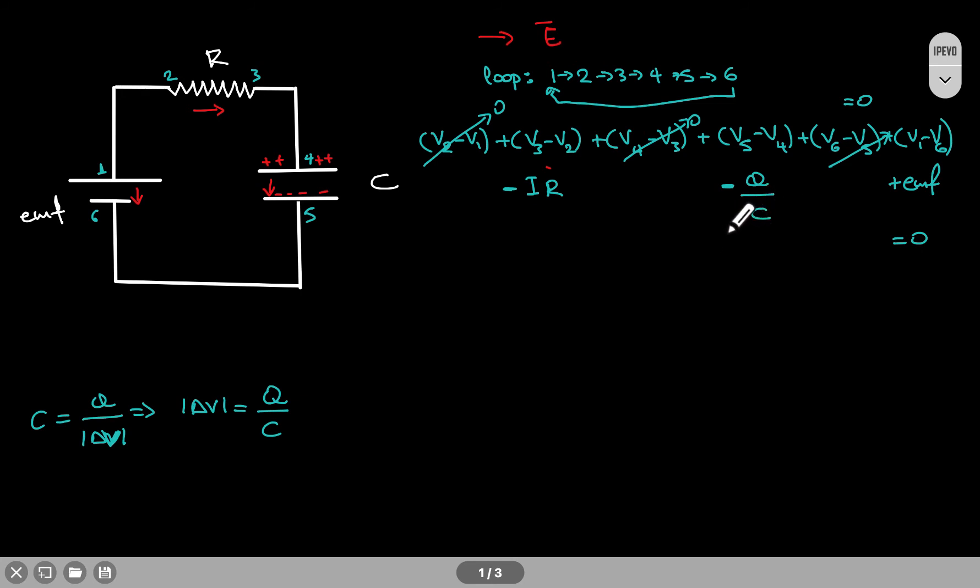So I'm using here Q over C, and I'm going to write again the equation that I get: minus IR minus Q over C plus EMF is equal to 0.